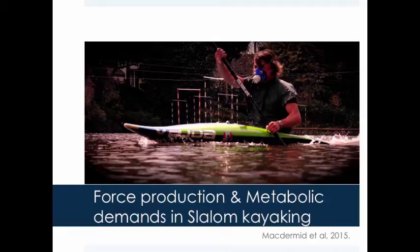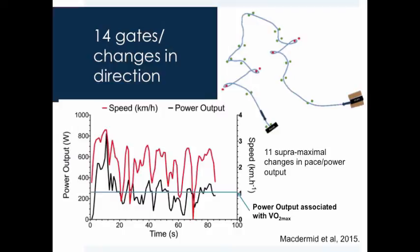Firstly, we identified that work rate is indeed intermittent and that the high power outputs are achieved typically between the gates while lower power outputs are achieved while negotiating the gates. You can see from this slide that power output of this individual goes beyond that associated with the VO2max. These instances are referred to as supermaximal changes in pace or power output. In a 14-gate course, 11 of these occurred and are typically associated with deceleration and acceleration while negotiating the gates.